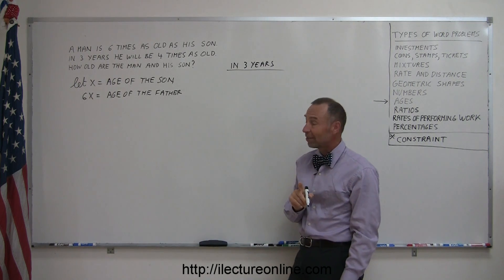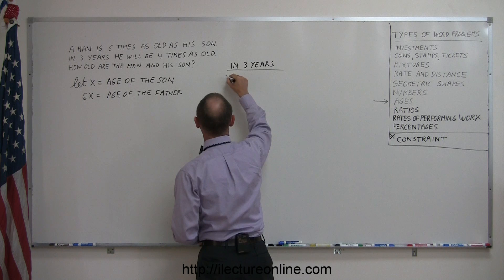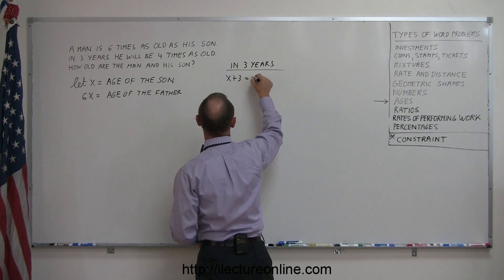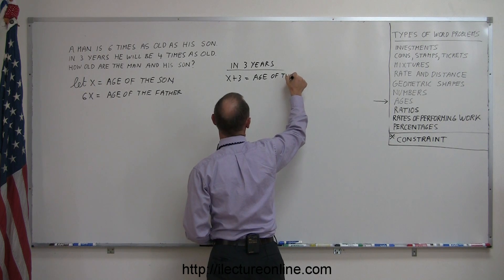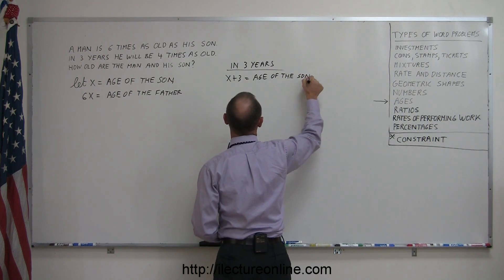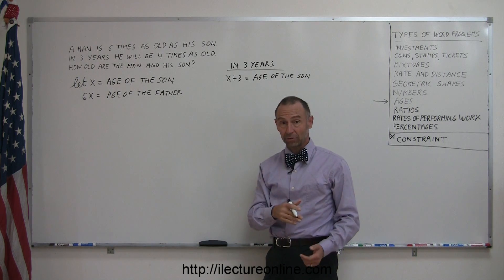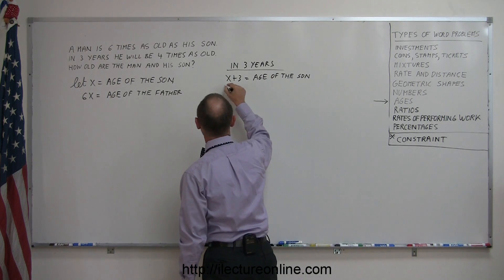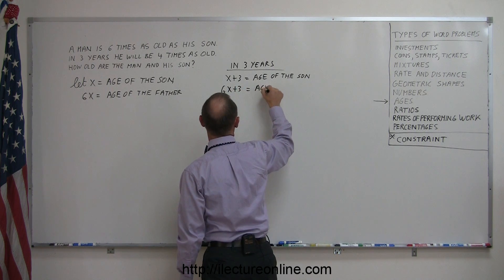If x is the age of the son today, then in three years he'll be three years older. That means x plus 3 will be the age of the son. And if 6x is the age of the father today, then in three years he'll be 6x plus 3 years old in terms of x.